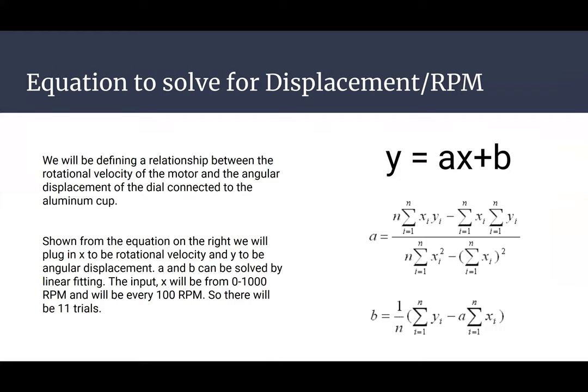And we will be defining a relationship between the rotational velocity of the motor and the angular displacement of the dial that is connected to the aluminum cup. So shown from the equation on the right, we will be able to plug in x, which is our rotational velocity, to solve for our y, which is our angular displacement. And a and b can be solved by linear fitting, and our input x will be between 0 to 1000 RPM and will be every 100 RPM. So there will be a total of 11 trials.